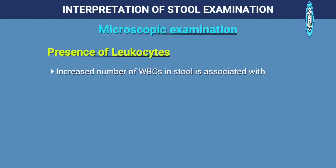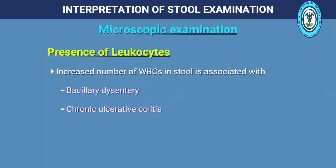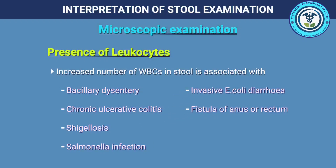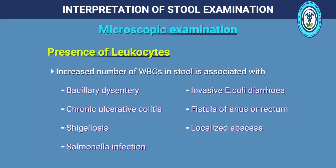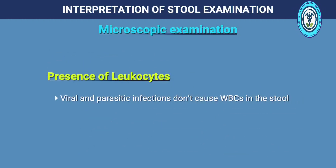Increased number of white blood cells in stool is associated with bacillary dysentery, chronic ulcerative colitis, shigellosis, salmonella infection, E. coli diarrhea, fistula of anus or rectum, localized abscess, and sometimes with amoebiasis and typhoid. Viral and parasitic infections do not cause white blood cells in the stool.